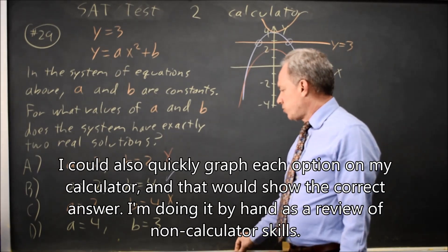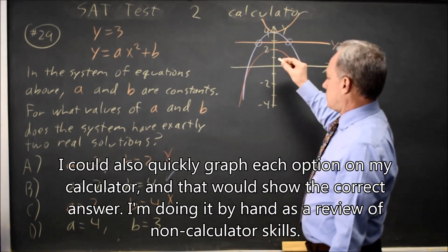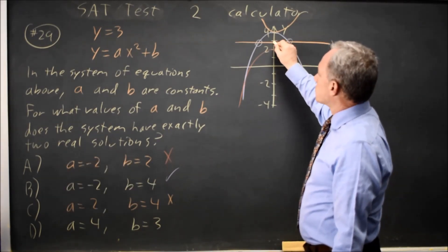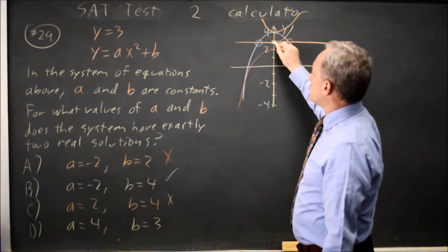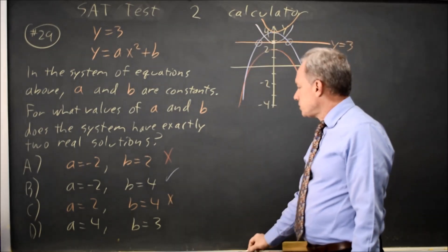And choice D, A equals 4, B equals 3. Since B equals 3, the vertex is on the line Y equals 3. And A equals 4, the parabola opens up from there. So there's only one solution.